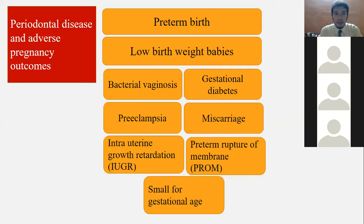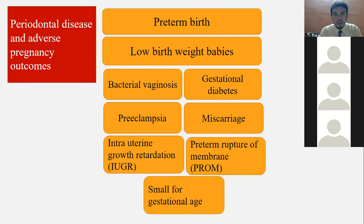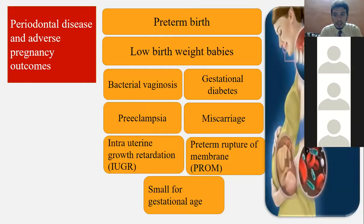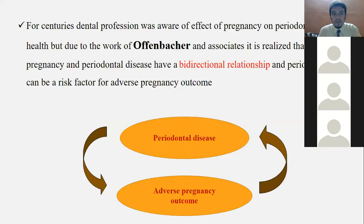Now we begin with the actual topic: periodontal disease and adverse pregnancy outcomes. The most important adverse pregnancy outcomes are preterm birth, low birth weight babies, preeclampsia, miscarriage, intrauterine growth retardation, premature rupture of membranes, and small for gestational age. When we consider the relationship between periodontal disease and adverse pregnancy outcomes, the most common authority is Offenbacher.